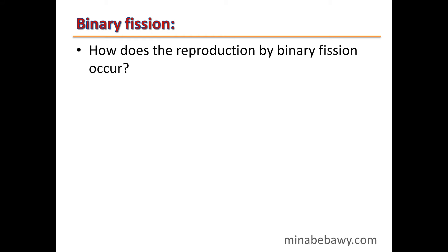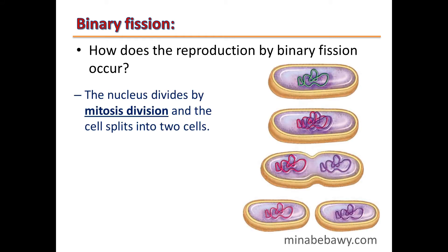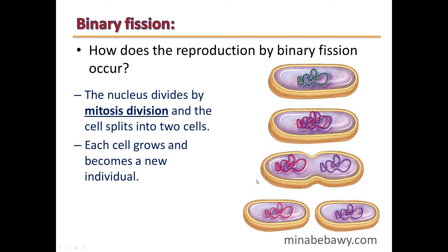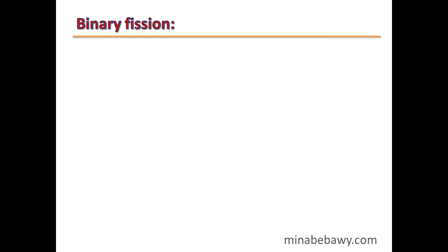How does reproduction by binary fission occur? The nucleus divides by mitosis division and the cell splits into two cells. Each cell then grows and becomes a new individual.